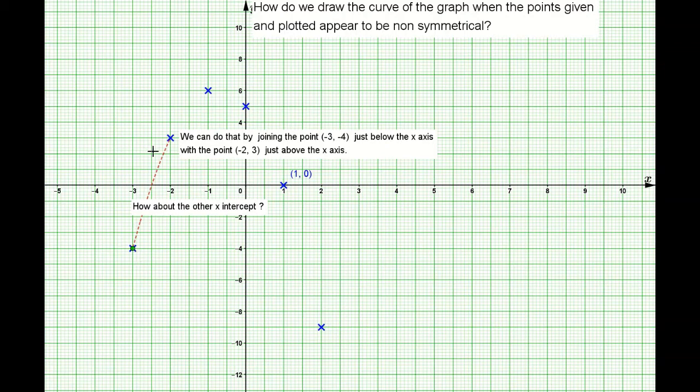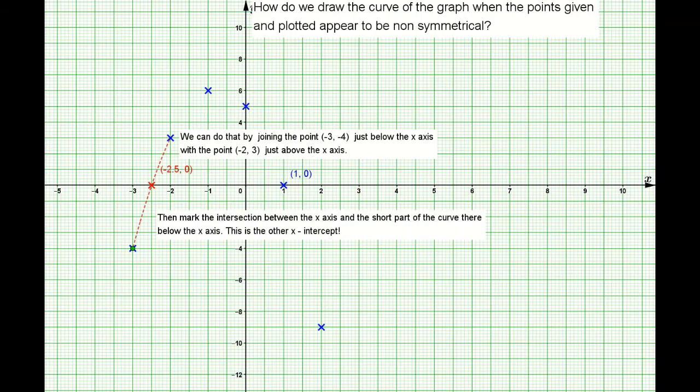The other point, negative 2, 3, is just above the x-axis. So actually we should be able to find the x-intercept even if we can trace out. We trace out approximately, then we should be able to mark the point where this small portion of the graph cuts the x-axis. It turns out to be very close to negative 2.50.